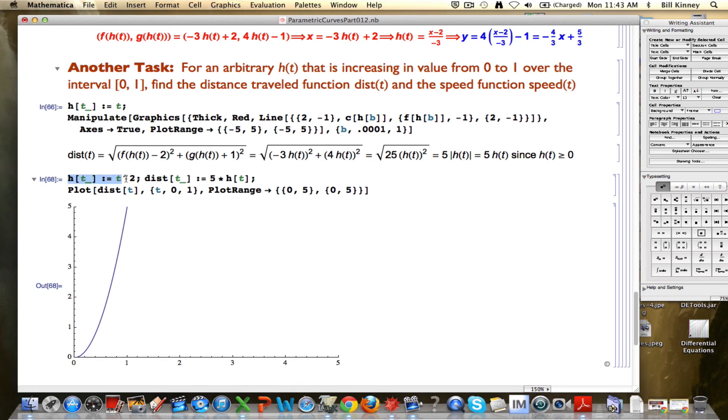If h of t is t squared, this distance traveled function looks like a parabola, part of a parabola. You're starting out slow because the slope down here is very low, but then you end up going faster and faster because the slope gets greater.